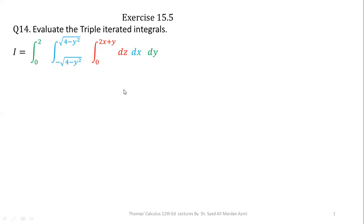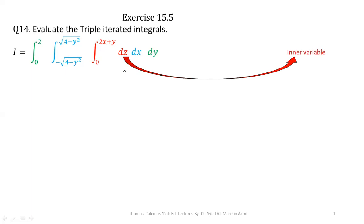In triple integrals, we have three kinds of variables. The variable written on the most inner side is called the inner variable. The variable in the middle is called the central variable, and the variable on the outside is called the outer variable.